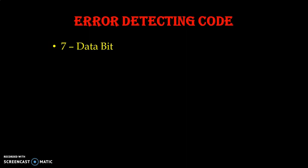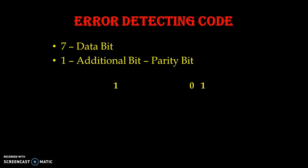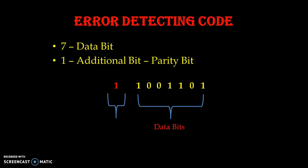So we have error detection code. We have total 8-bit data, and out of 8 bits, 7 bits are known as data bits and the additional 1 bit is known as the parity bit. The parity bit will decide whether there is an error or not. So we have 7 data bits and one additional parity bit in error detection code.